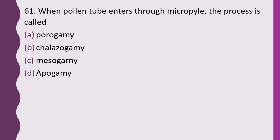Question 61. When a pollen tube enters through the micropyle, the process is called: porogamy, chalazogamy, mesogamy, or epogamy. The correct answer is option A, porogamy.